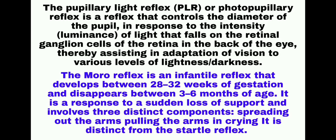The pupillary light reflex is a reflex that controls the diameter of the pupil in response to the intensity of light that falls on the retinal ganglion cells of the retina, thereby assisting in adaptation of vision to various levels of lightness or darkness. The Moro reflex is an infantile reflex that develops between 28 to 32 weeks of gestation and disappears between 3 to 6 months of age.